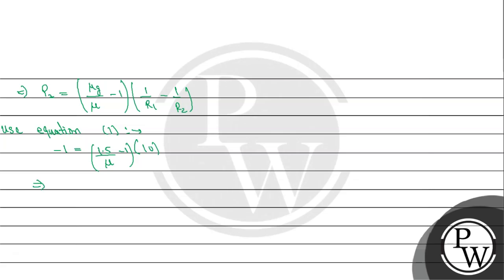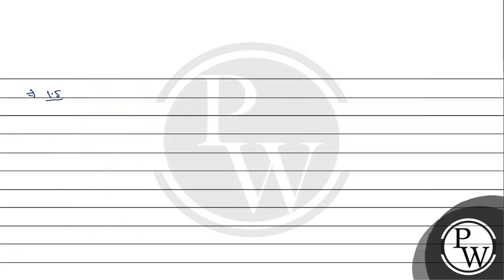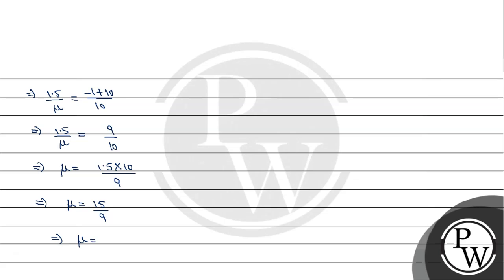We can write: 1.5/μ - 1 = -1/10. Taking LCM on the right-hand side: 1.5/μ = 1 - 1/10 = 9/10. Therefore, μ = 1.5 × 10/9 = 15/9. Cancelling by 3 from numerator and denominator, we get μ = 5/3.